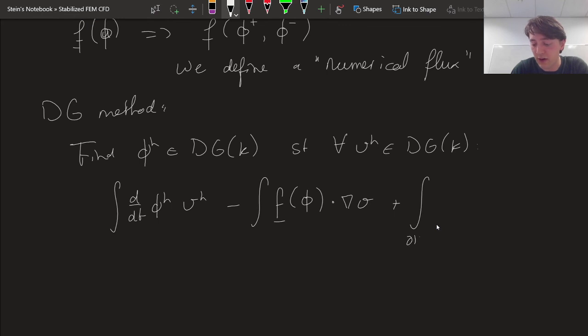we now choose this numerical flux, f hat of phi plus and phi minus, dot n times v. That's going to be equal to zero.